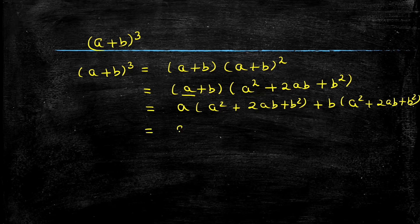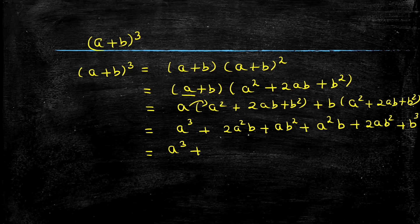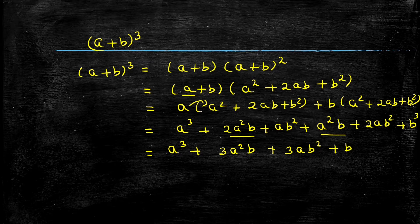Let's multiply them one by one. a into a square is a cube. a into 2ab is 2a square b, and a into b square is ab square. Then b into a square gives a square b, plus 2ab square, and b into b square is b cube. Now combining like terms: a cube, then 2a square b plus a square b gives 3a square b, then ab square plus 2ab square gives 3ab square, and finally b cube.